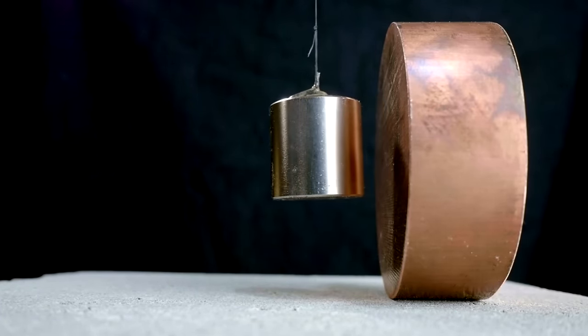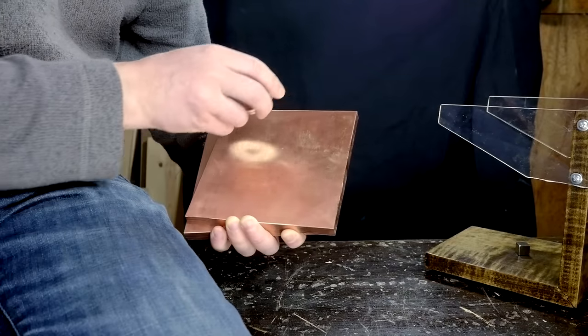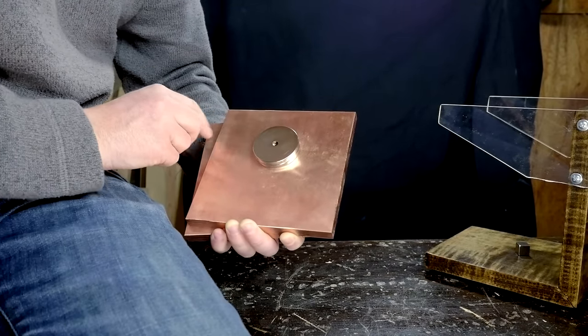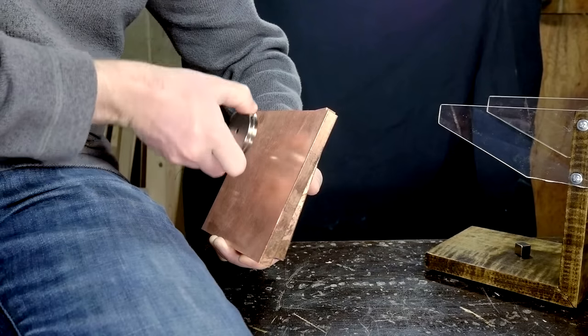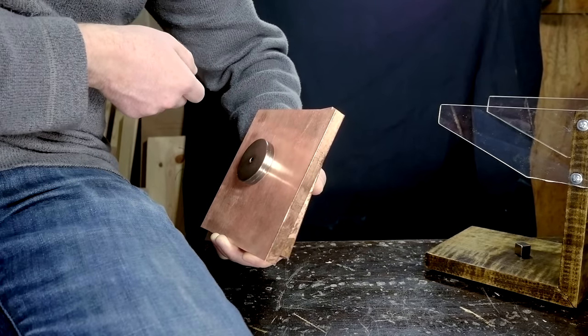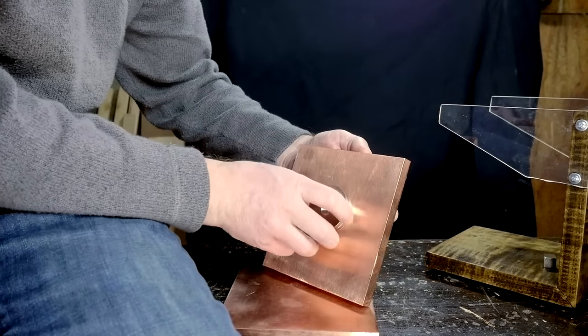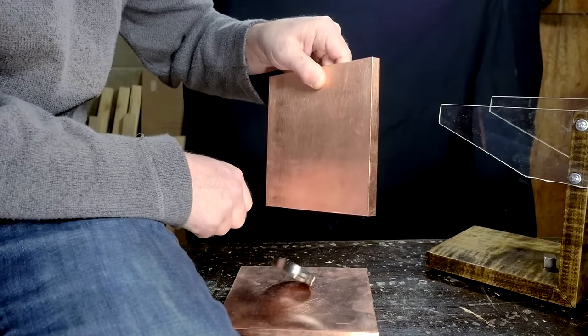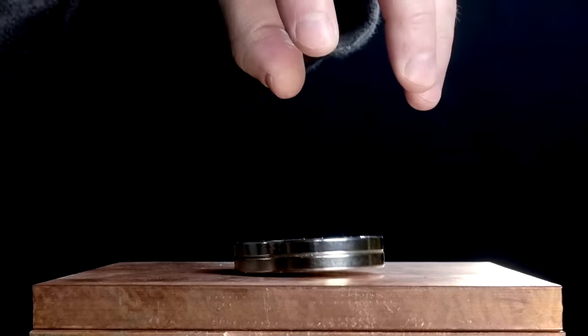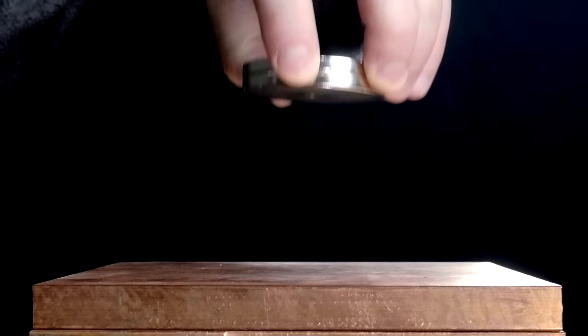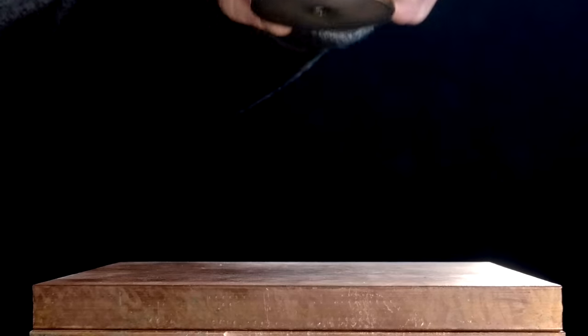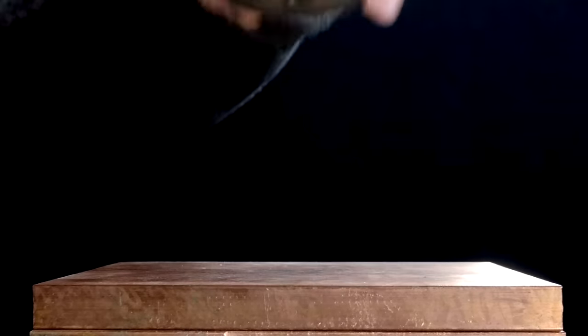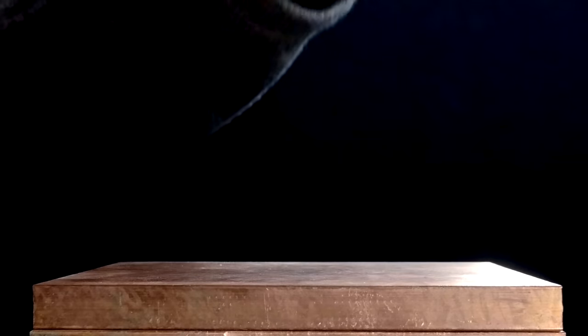Copper is not magnetic, so they don't exactly attract each other, but at the same time this magnet doesn't seem to want to slip off very quickly. It drags across the plate slowly, like it's moving through a thick fluid. It's even more interesting if I drop the magnet on the plate. It slows down mid-air and gently floats to the surface. So if the copper is not magnetic, something else must be causing this.